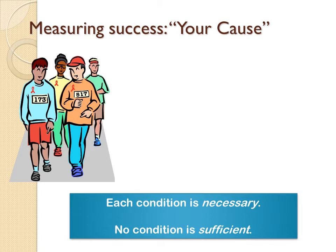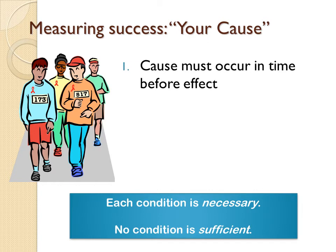And I guarantee you will see this on tests: each condition is necessary, and no one of these conditions is sufficient. The first condition is that the cause must occur in time before the effect — the variable you are calling a cause must have occurred in time before the variable you are calling an effect.